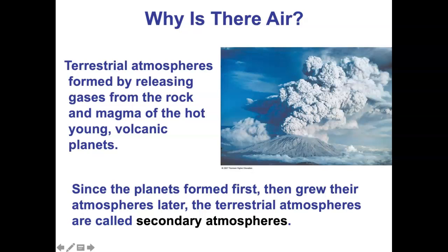Gases were trapped in the rock and dust while the planets were forming. When that rock smashed into the Earth and melted, the gases were released. Then you started having volcanoes. As the terrestrial protoplanets formed, they were volcanically active and lots of gases were released. This still happens today — when volcanoes erupt, a lot of gas is released because it was trapped in the magma. This is where the atmospheres of the terrestrial planets came from. We call these secondary atmospheres because they came second — the planet formed first, then volcanoes erupted and blew out gas trapped by the planet's gravity.